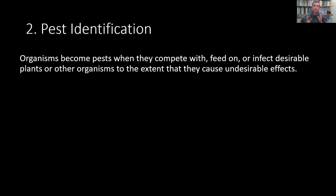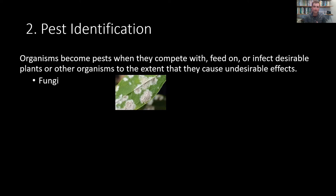Let's look at a number of different types of organisms that are commonly referred to as landscape pests. First off, we have fungi. Fungi is the plural of fungus. Fungi are unique organisms on Earth — they're not plants, they're not animals.